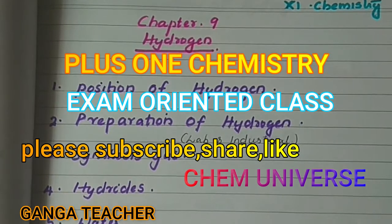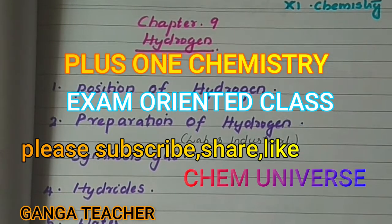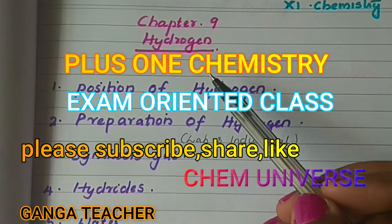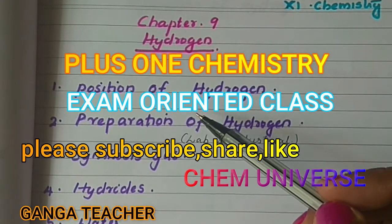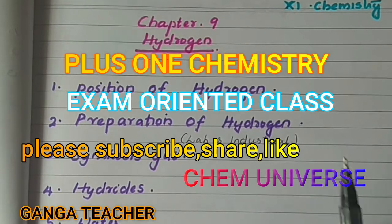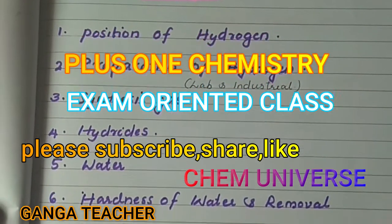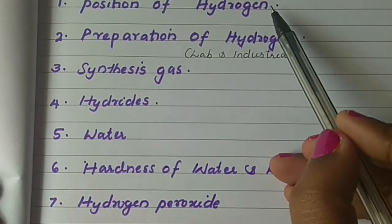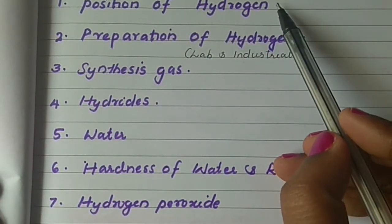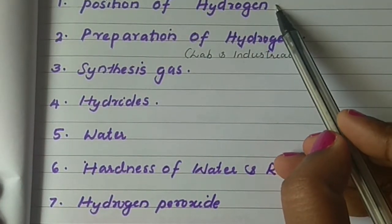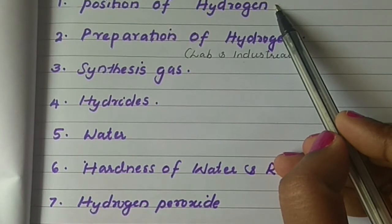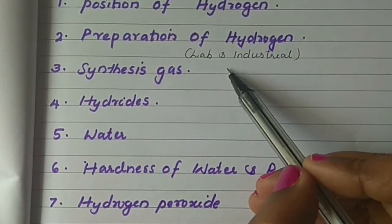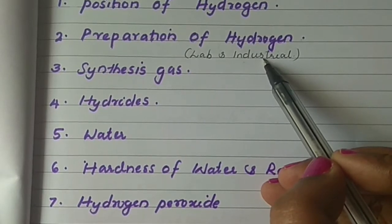My dear students, here is Plus 1 Chemistry, Chapter 9: Hydrogen. Hydrogen in this chapter is exam-oriented and is worth 7 points. The first point is hydrogen's position in the periodic table.